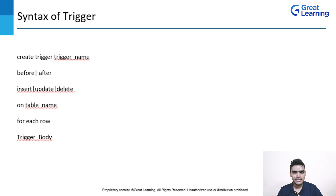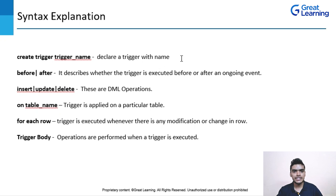Here is the formal syntax explanation: CREATE TRIGGER trigger_name declares the trigger with a name. BEFORE/AFTER specifies timing. INSERT/UPDATE/DELETE are DML operations. ON table_name specifies which table the trigger applies to. FOR EACH ROW fires the trigger for every affected row. And the trigger body is where operations are performed when the trigger executes.